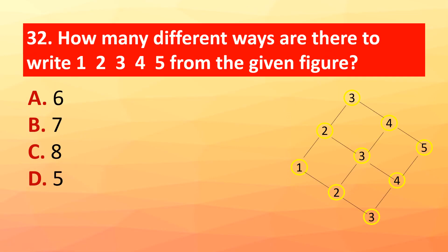Question 32: How many different ways are there to write 1, 2, 3, 4, 5 from the given figure? The correct answer is option A: 6.